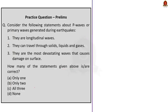The third question gives three statements about P waves or primary waves. Statement one — they are longitudinal waves — is correct. Statement two — they can travel through solids, liquids and gases — is also correct, unlike S waves which can only travel through solids since they are shear waves. Statement three — they are the most devastating waves that cause damage on the surface — is incorrect, because it is surface waves that cause the most damage. Since statements one and two are correct, the answer is option B, only two.